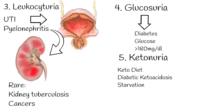Other triggers for ketonuria include fasting or prolonged starvation, which depletes glucose reserves, prompting fat metabolism. Additionally, extended physical activities, especially when not accompanied by adequate carbohydrate replenishment, can lead the body to metabolize fats, resulting in ketone production.